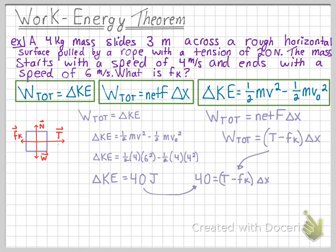We can set each of these left and right sides of the equation equal to one another. We know that the tension force is 20 and the displacement is 3. We can solve and we find that the kinetic friction force is 6.7 newtons.